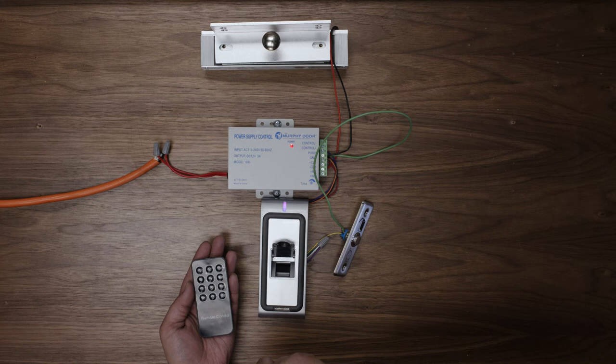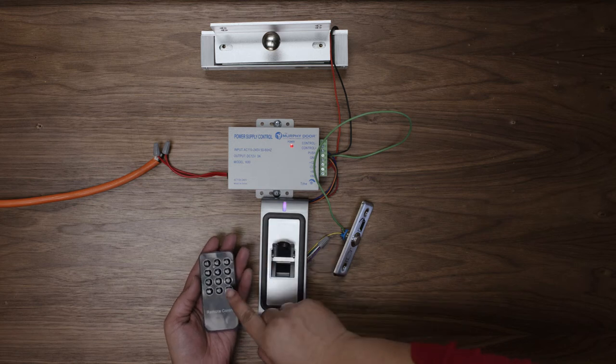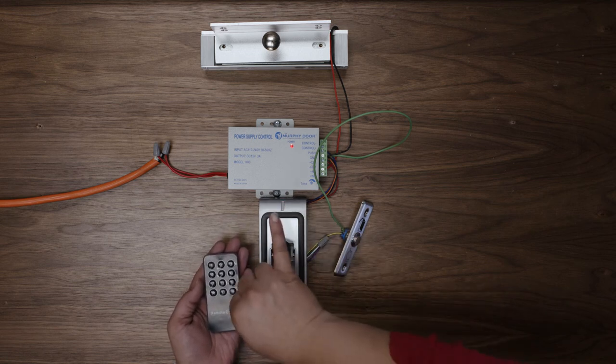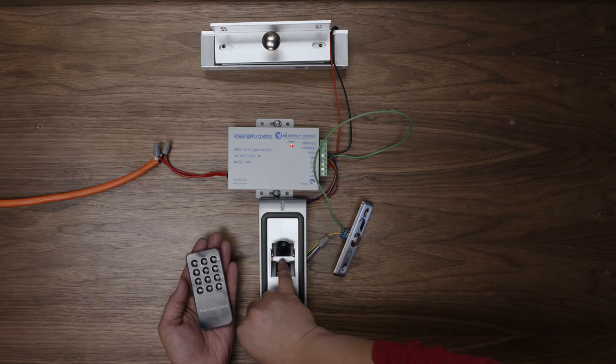You have to exit admin mode in order to scan a new user fingerprint. Do this by pressing pound and the purple light will change back to a red flashing light. Re-enter admin mode by scanning your admin fingerprint.